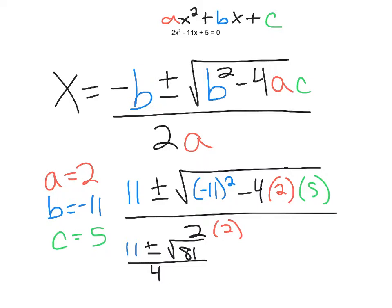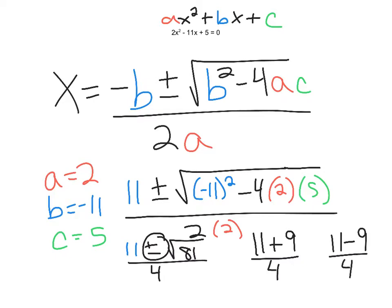Now I need to get my two answers — that's why we have plus or minus. So I have 11 plus the square root of 81, which is 9, so 11 plus 9 over 4. And then 11 minus 9 over 4. 11 plus 9 is 20, divided by 4 is 5. 11 minus 9 is 2, divided by 4 is 0.5 or one half. What did we just find? We found where this crosses the x-axis — these are the intercepts. So x equals 5 and x equals one half.